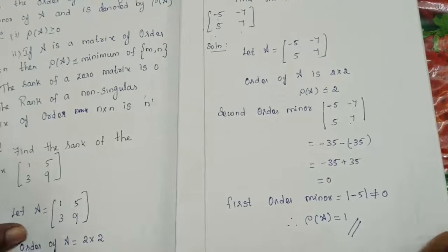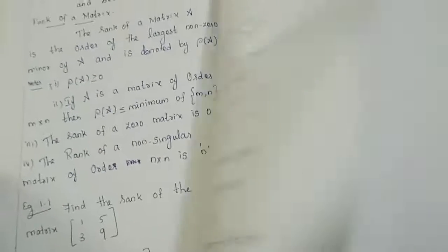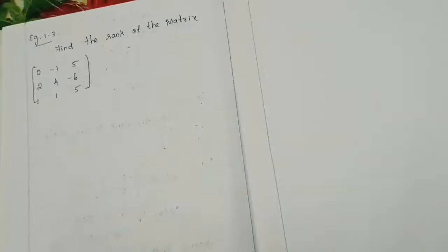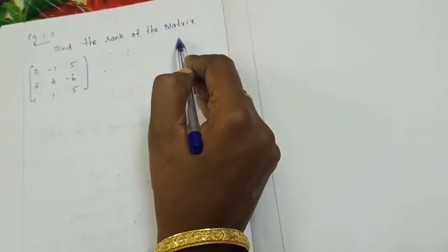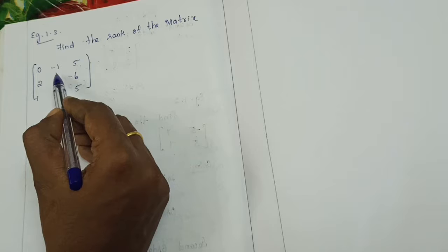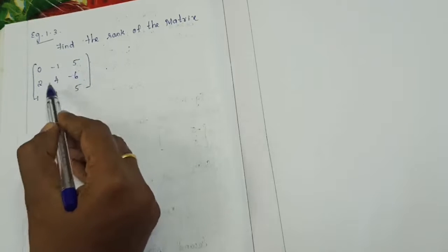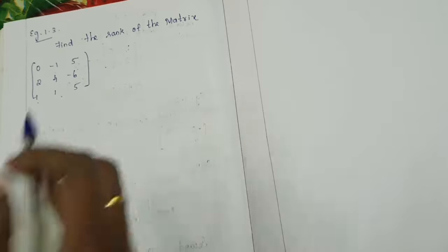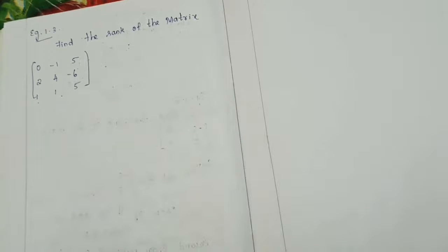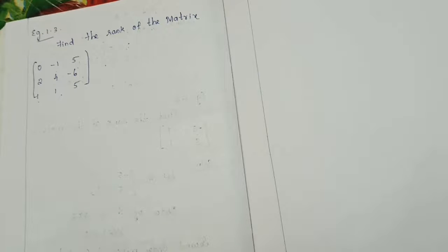I hope you got it. Next question: find the rank of the matrix 0, minus 1, 5; 2, 4, minus 6; 1, 1, 5. This has 3 rows and 3 columns, so it is a 3 cross 3 matrix. The solution is the same approach as the last question.